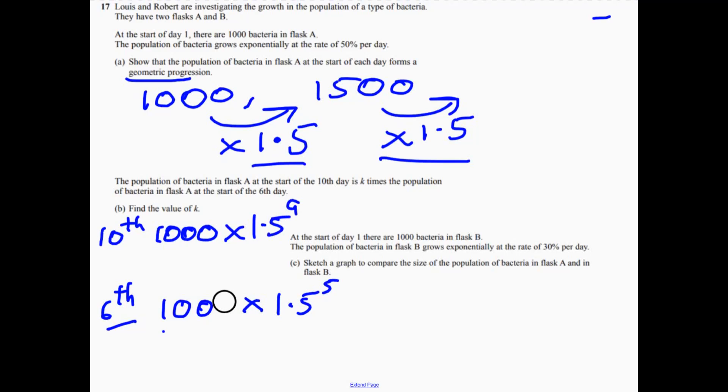Now, we need to know how many times bigger this is over this. That's what the question is actually asking us to do. So in other words, we want to do this figure divided by our second figure. That's actually easier than you think as well, because 1,000 divided by 1,000, that goes. 1.5 to the 9 divided by 1.5 to the 5 is actually 1.5 to the 4. And if you really want to work that out, you can do.